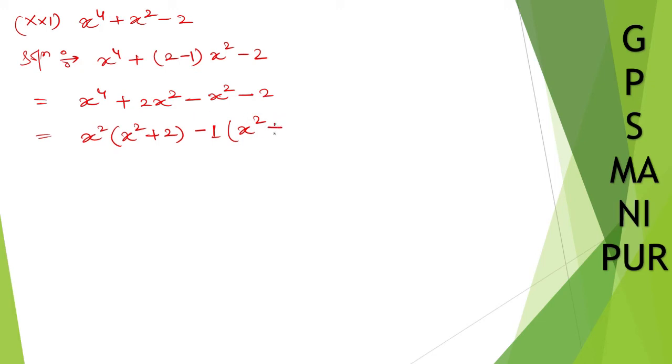Okay, now x squared plus 2 and x squared plus 2, write down x squared plus 2. So what's left out will be x squared minus 1, x squared minus 1.